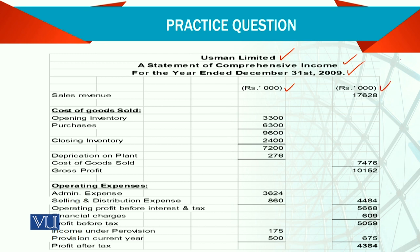We are not taking each and every rupee but rounding up to thousands. For the cost of goods sold, we have the opening, purchases, and closing. We calculate the cost of goods sold, and then we add depreciation of plant because it is mentioned in the adjustment that depreciation of plant is to be added to the cost of goods sold. Then we have the total and gross profit.